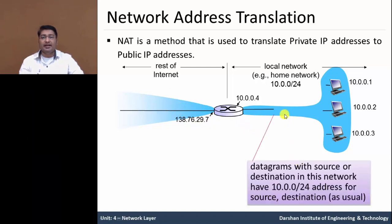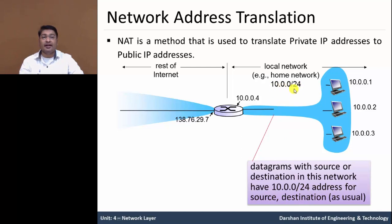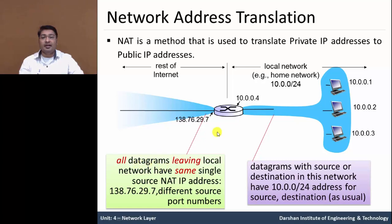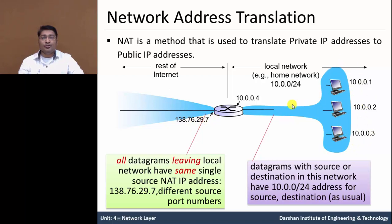The datagram — meaning the packet with source or destination in this network — has the 10.0.0.0/24 address. This is our network address. All datagrams leaving the local network have the same single source IP address, known as the NAT IP address 138.76.29.7, with different source port numbers. In short, all machines in the local network communicate using a single public IP address. These are the private IP addresses, and 138.76.29.7 is the public IP address.